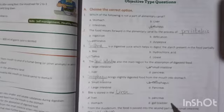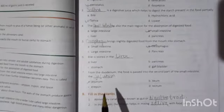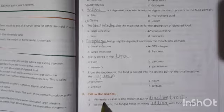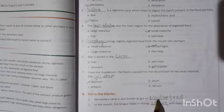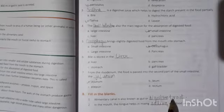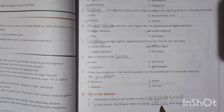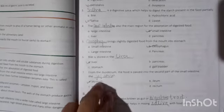Now comes fill in the blanks. Elementary canal is also known as gut or, the answer is digestive tract. D-I-G-E-S-T-I-V-E-T-R-A-C-T. Second is, in the mouth, tongue helps in mixing. The answer is saliva. S-A-L-I-V-A. Saliva with food and soften it.